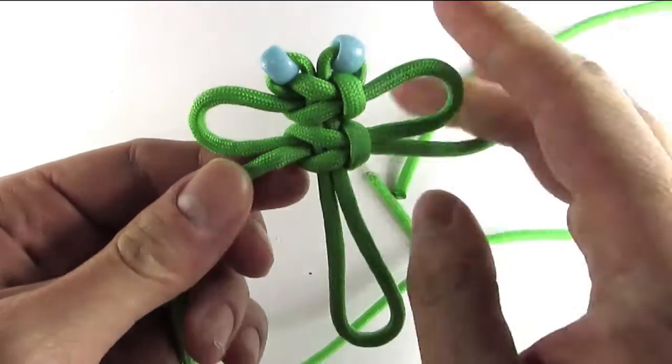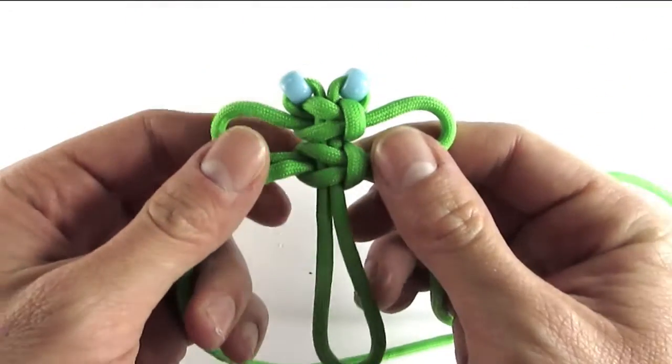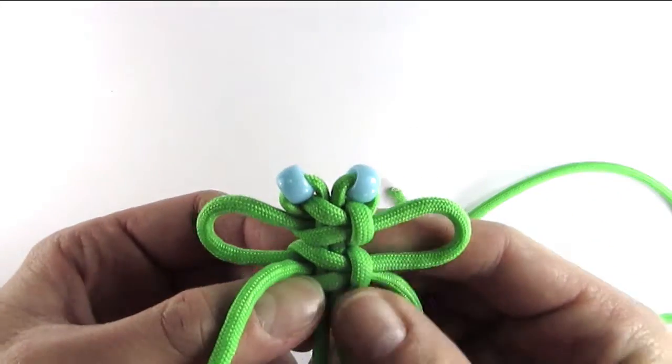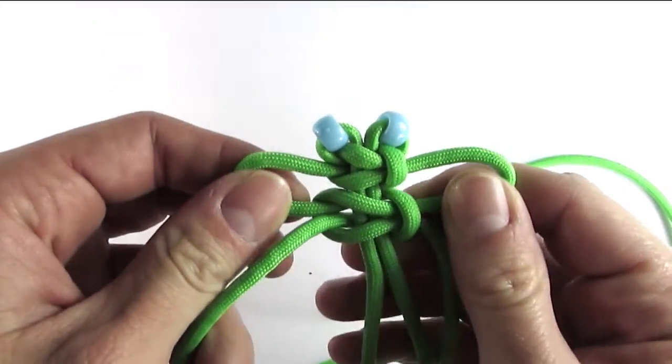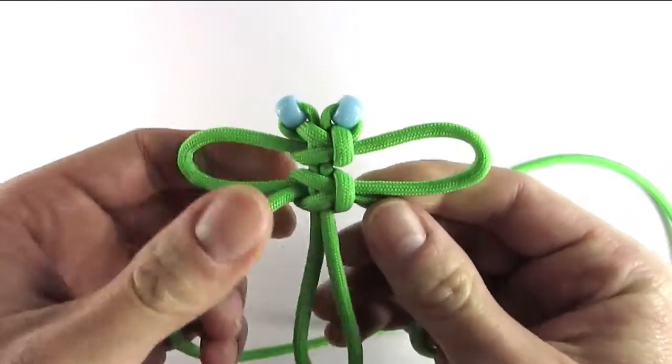If you find them to be a bit small, you can also just feed in a bit more cord to the wings and pull on both of them at the same time to get a larger wingspan.